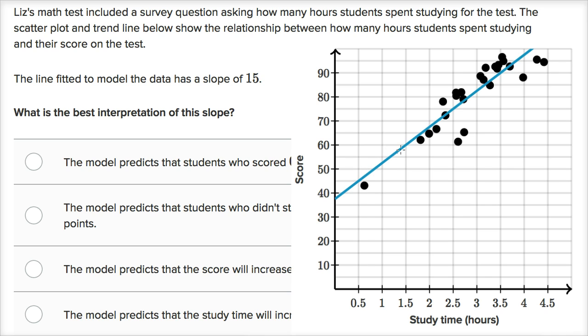And so then they fit a line to it. And this line has a slope of 15. And before I even read these choices, what's the best interpretation of this slope? Well, if you think this line is indicative of the trend and it does look like that from this scatter plot, that implies that roughly every extra hour that you study is going to improve your score by 15. You could say on average according to this regression.